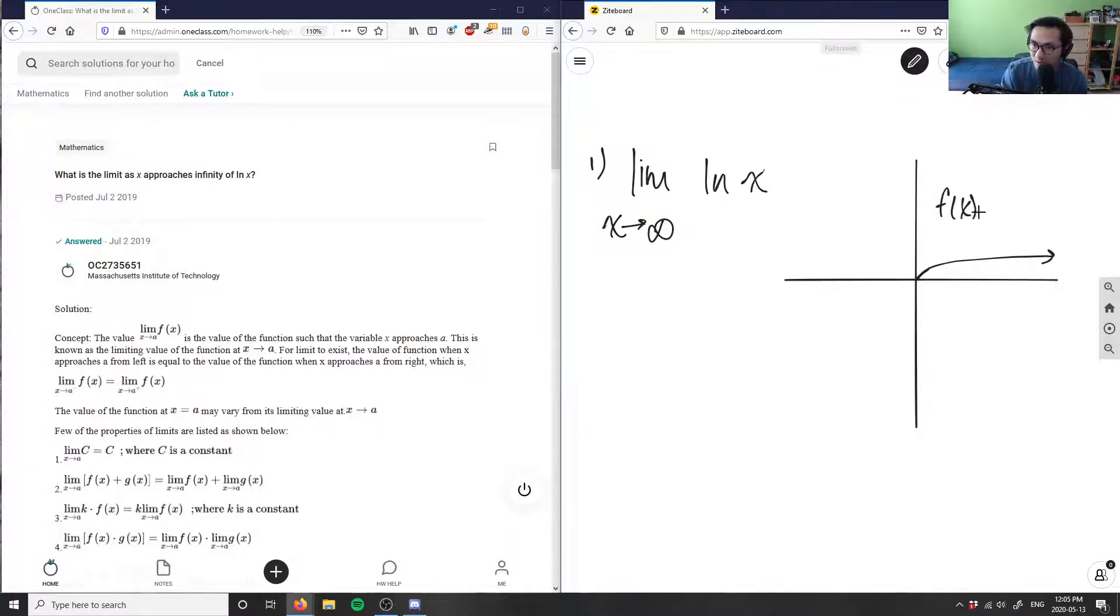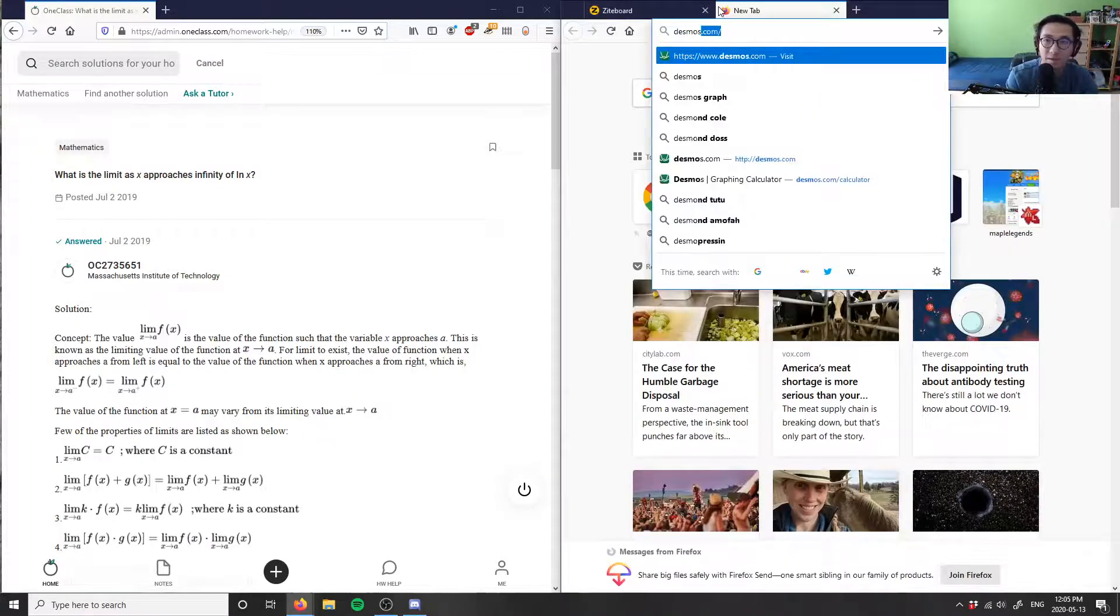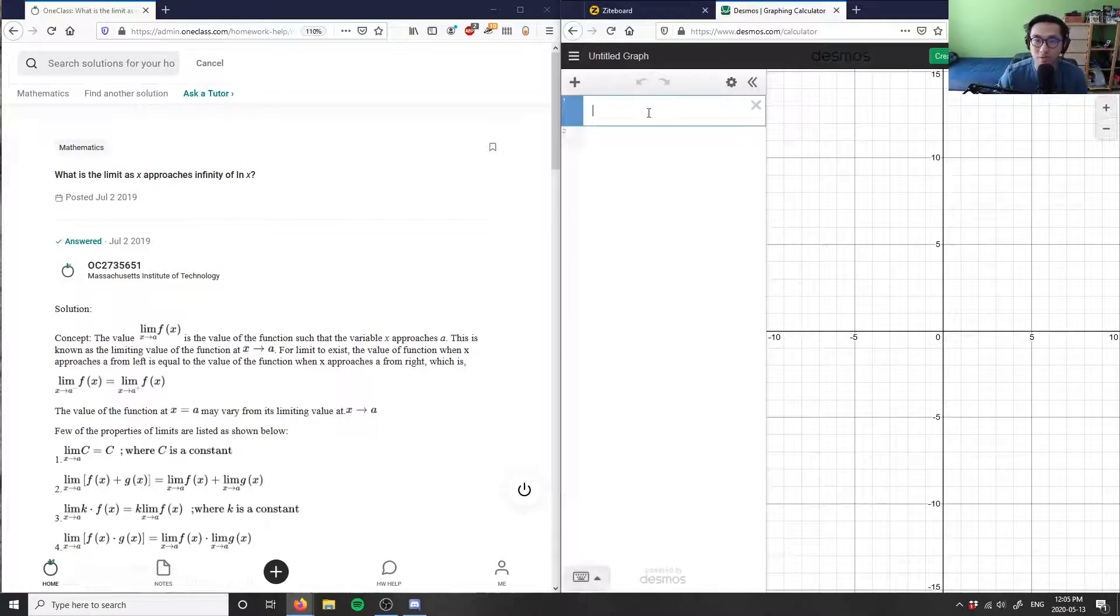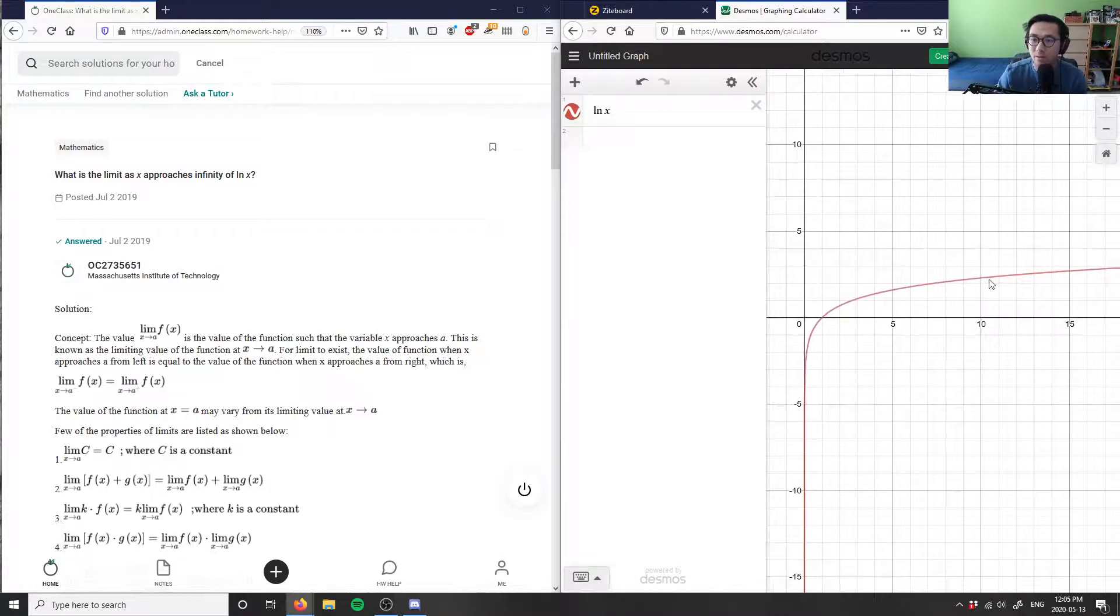If you wanted a better diagram, I highly encourage Desmos.com. It shows you what this graph looks like. If I were to type in ln(x), you can see this guy steadily increases towards the right-hand side when we go towards positive infinity.